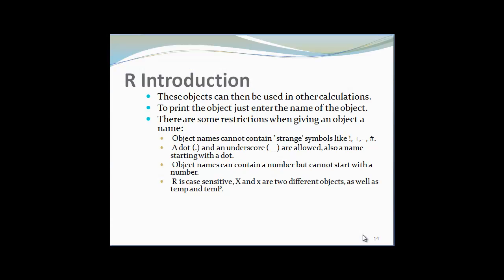There are some restrictions when using an object name. The object name cannot contain strange symbols like exclamatory, addition, subtraction, hyphen. A dot and an underscore are allowed. Also a name starting with a dot is allowed. Object names can contain a number but cannot start with a number. You can write x1 but you cannot write 1x as an object name. R is also case sensitive, meaning uppercase and lowercase means two different objects. Uppercase X is a different object and lowercase x is a different object.